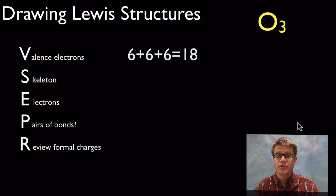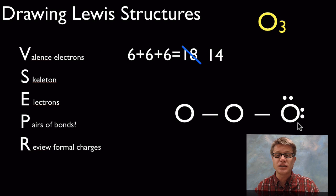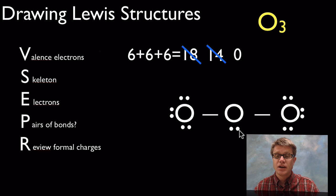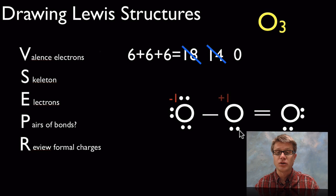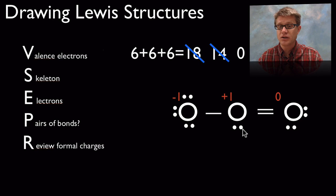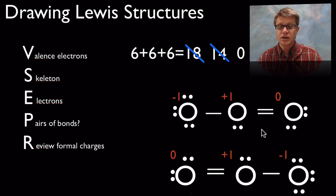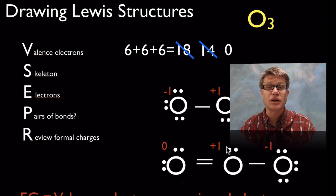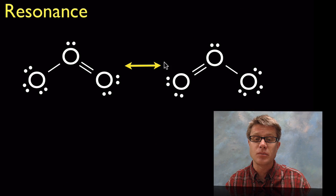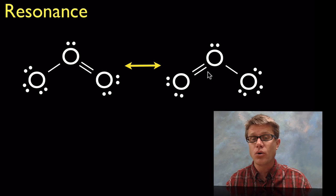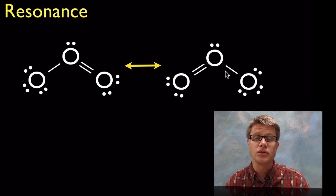Now let's go to ozone, O3. Add the valence electrons, sketch out the skeleton, and add those electrons — you can see there's an extra one compared to carbon dioxide. Drawing it out gives one structure with certain formal charges. But you can invert it to get the other structure with the same formal charges. Remember, formal charges closer to zero mean a more stable structure. Since these two structures have the exact same formal charges, I draw resonance — a two-way arrow in the middle — meaning both structures are valid.